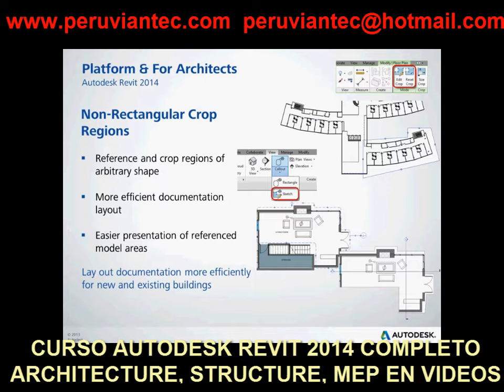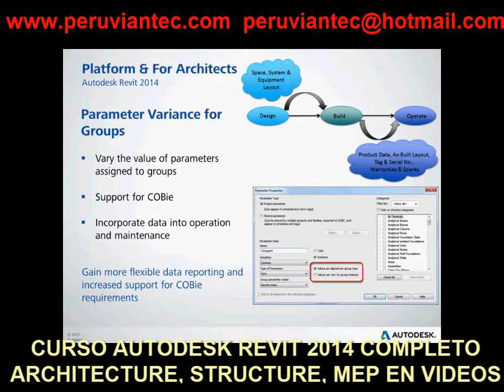When creating an instance project parameter for text, area, volume, currency, mass density, URL, material, and family type only, you now have the option to allow the value to vary for different group instances. The user can edit the parameter value for an element in a group instance without changing the value for the corresponding elements in other group instances. This feature gives you more flexibility with data reporting and increased support for COBie requirements.